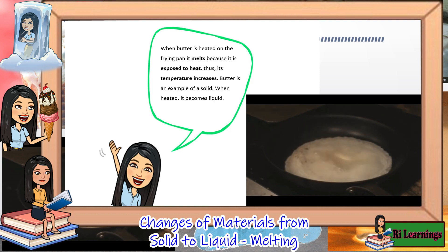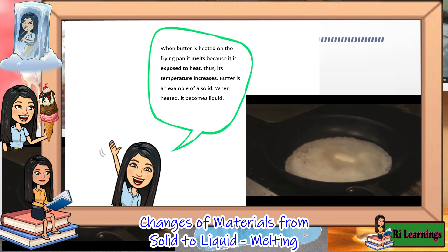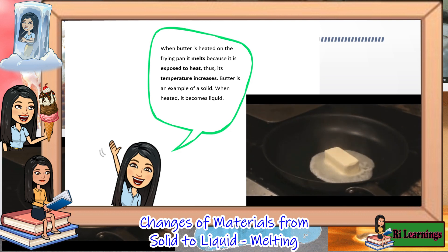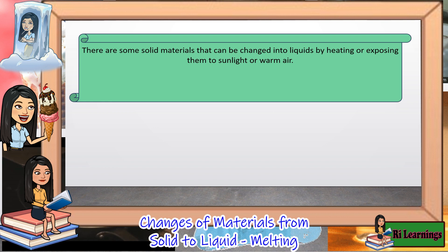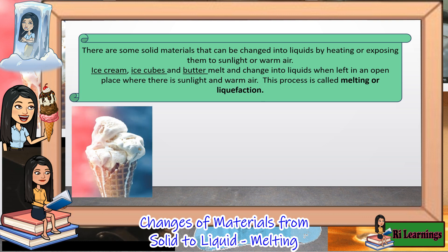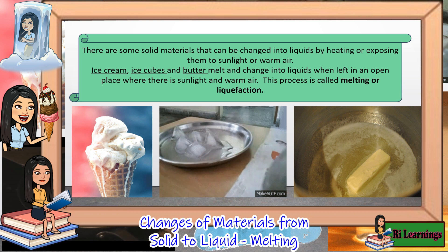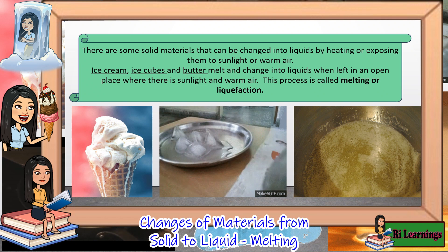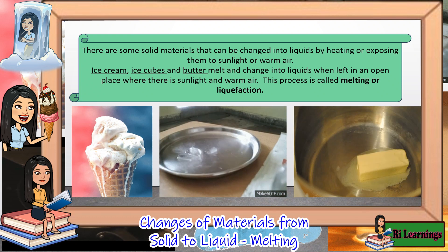Thus, its temperature increases. Butter is an example of solid. When heated, it becomes liquid. Solids become liquid by heating or exposing them to sunlight or warm air. Ice cream, ice cubes, and butter melt and change into liquids when left in an open place where there is sunlight and warm air. This process is called melting or liquefaction.